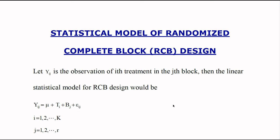So the linear statistical model for RCB design would be yij equals mu plus ti plus bj plus eij. Here, i varies from 1 to k, and j equals 1 to r.